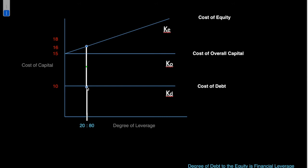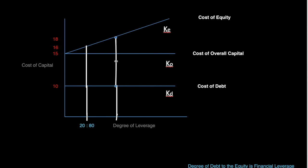The reason why the cost of equity capital goes up from 15% to 16% is because of the firm's increase in financial risk. In another case, if the percentage of debt goes to 50%, we can see that the cost of debt would remain the same, while the cost of equity would go up from 16% to 18%. In both cases, the cost of overall capital in case 1 and case 2 are the same. This is how the NOI approach is different from the others — it maintains that the cost of overall capital will remain the same irrespective of the degree of change of debt when compared to equity.